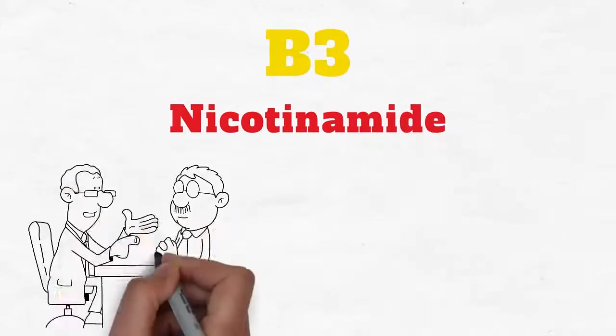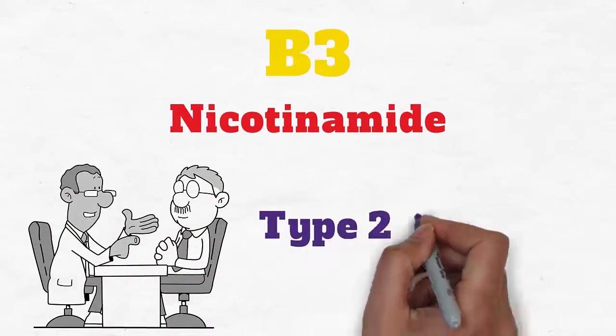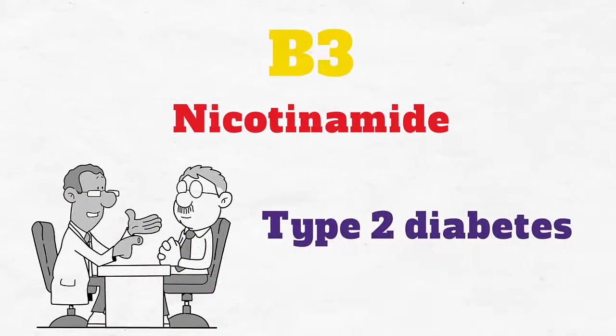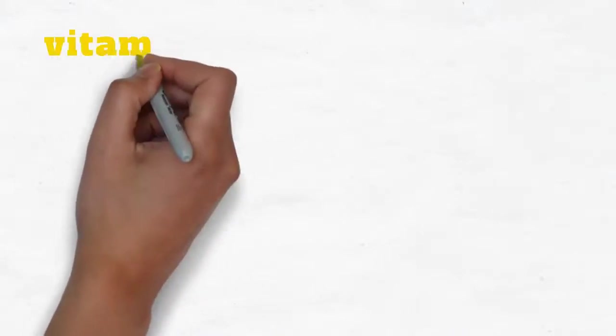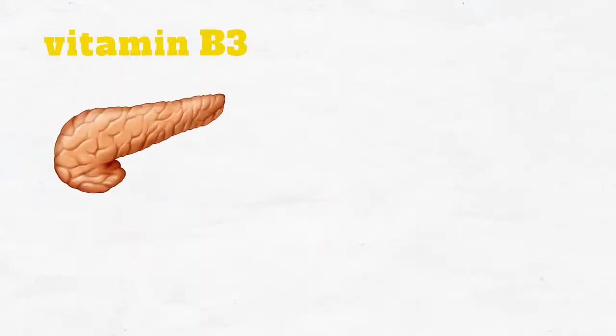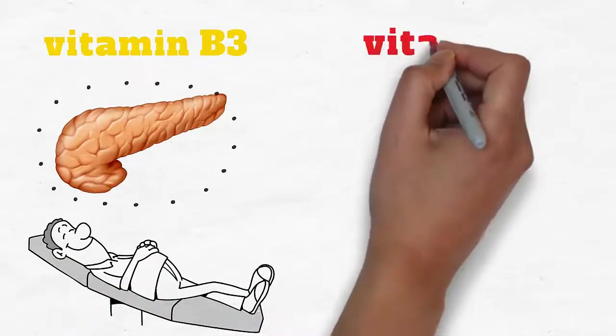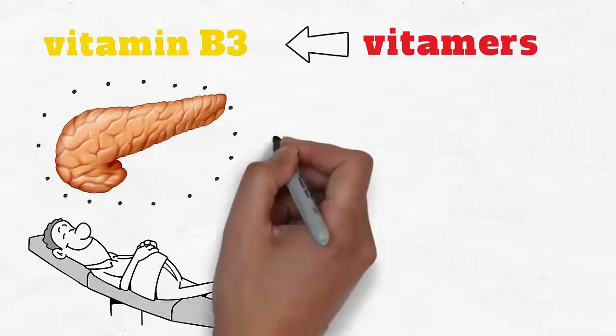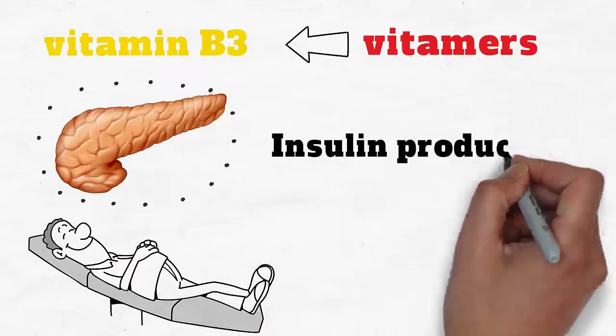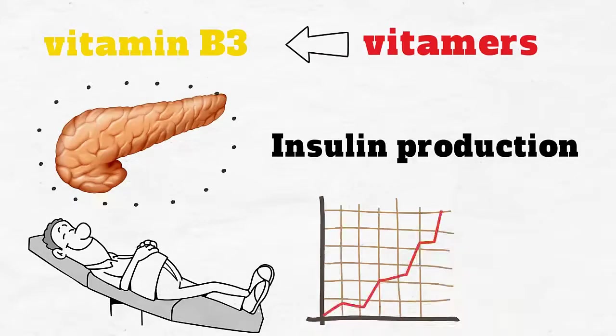B3. Nicotinamide is especially useful in the treatment of type 2 diabetes. This form of vitamin B3 has been proven to protect the beta cells of the pancreas in newly diagnosed diabetic patients. By protecting these cells, this vitamin can sustain insulin production and help improve blood sugar control.